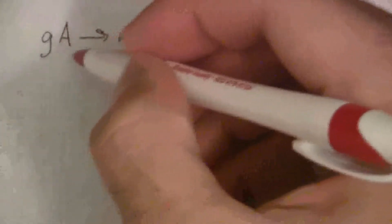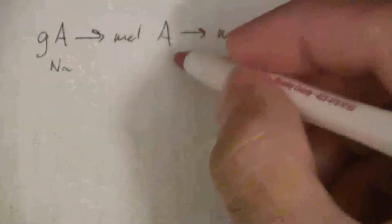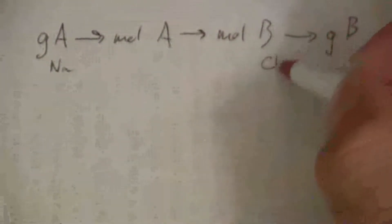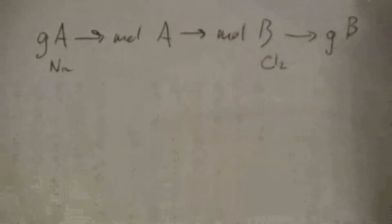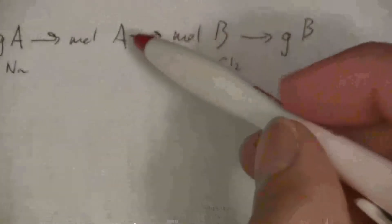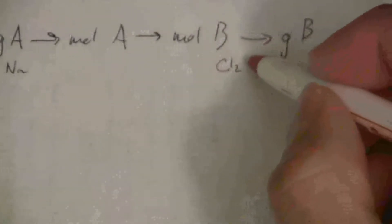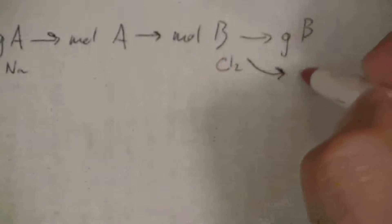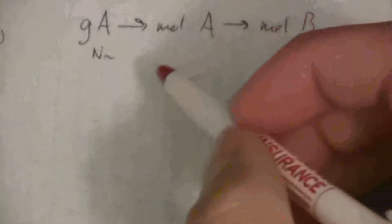So I could go grams of sodium, to moles of sodium, to moles of chlorine gas, to grams of chlorine gas, but in this case, I'm not asking for grams, I'm asking for liters. And I'm giving that it is at standard temperature and pressure. So essentially, I'm going to find my moles of B just like I would in this case. But then, instead of converting to grams of B, I'm going to convert to liters of B.